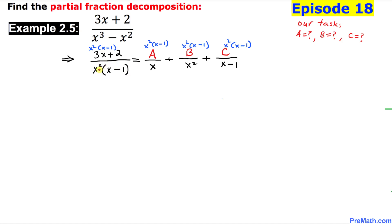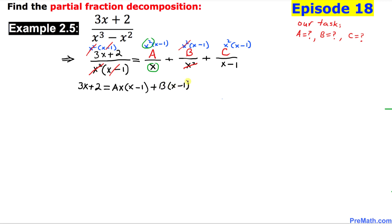On the left hand side, x squared times x minus 1 cancels with the denominator, leaving us with 3x plus 2. On the right hand side: one x cancels with x squared giving A times x times x minus 1; x squared cancels giving plus B times x minus 1; and x minus 1 cancels giving plus C times x squared. I'll call this equation 1.